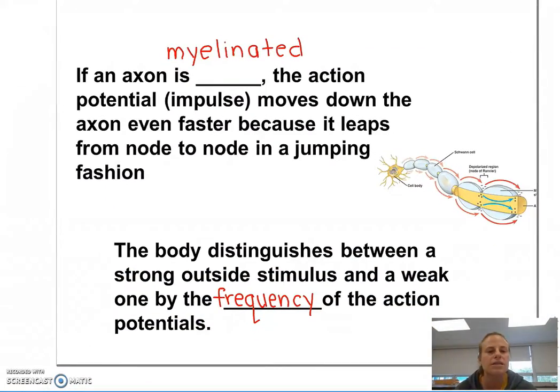So if an axon is myelinated, the action potential or the impulse moves down the axon even faster, because it's able to leap from node to node to node. Remember those nodes of Ranvier? So instead of having to travel all through the axon, it can eliminate parts of the axon and just jump down it.